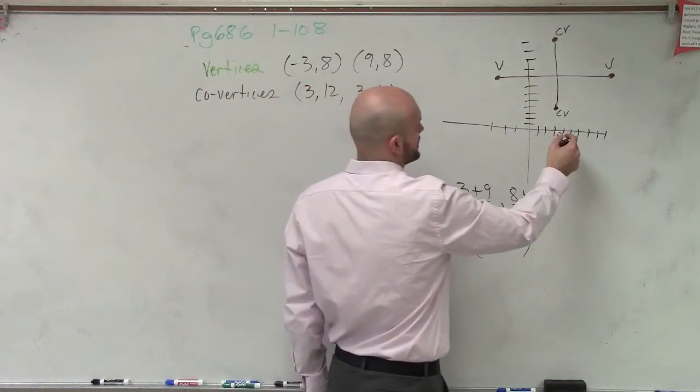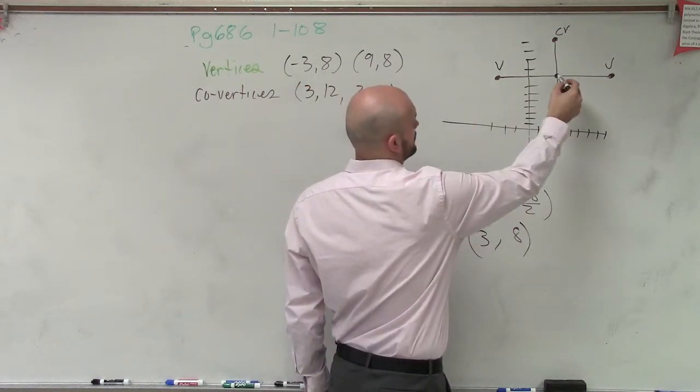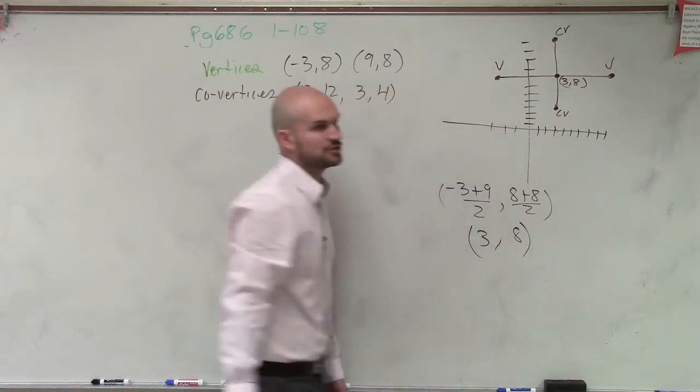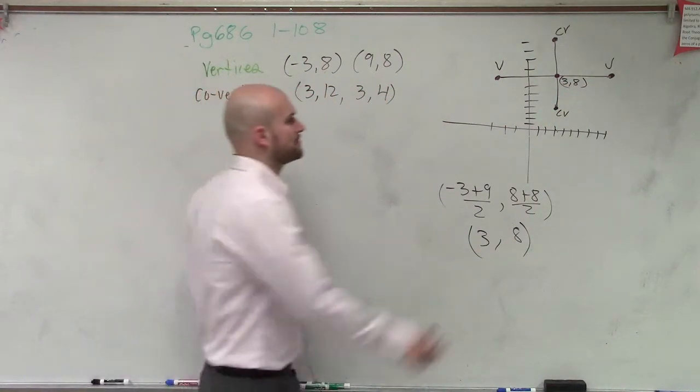So you can easily find the midpoint formula. And therefore, you get 3 up 8. So we know our center is at 3 comma 8. You could also do the midpoint between your two co-vertices.